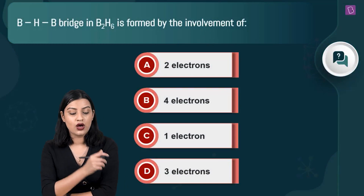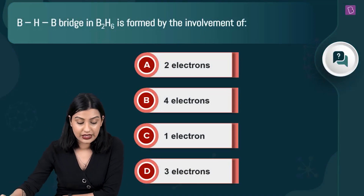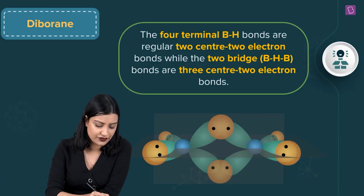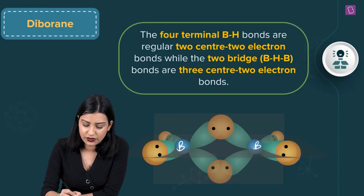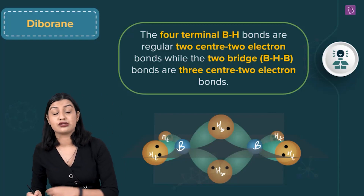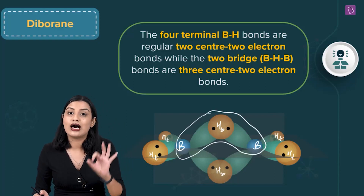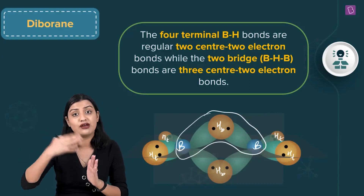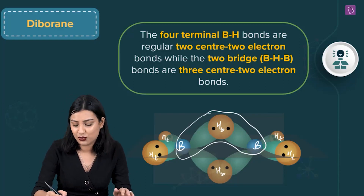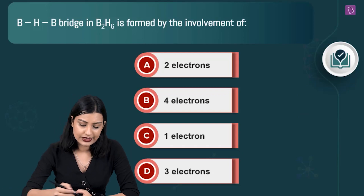Another question on diborane: how many electrons are involved in the formation of the BHB bridge bond in B₂H₆? We have the structure of diborane with two boron atoms, two bridging hydrogens, and terminal hydrogens. The terminal bonds are normal two-center two-electron bonds. The bridge bond is different — it involves boron, hydrogen, and boron: three centers but only two electrons. This is a three-center two-electron bond, so two electrons are involved. Option A, two electrons, is the right answer.